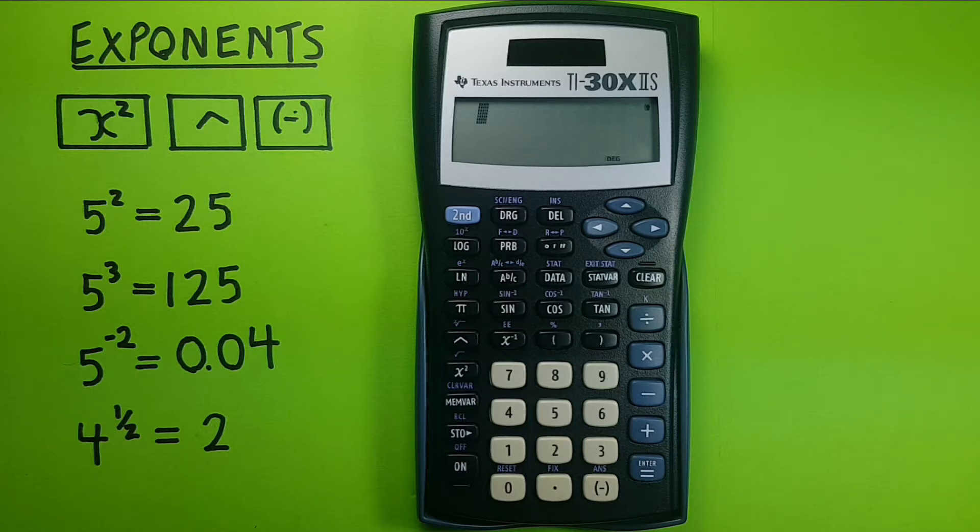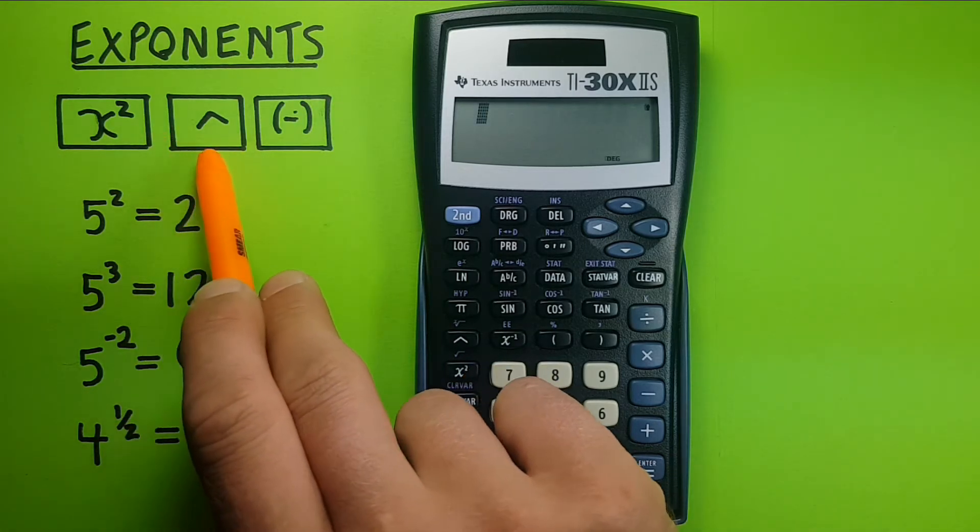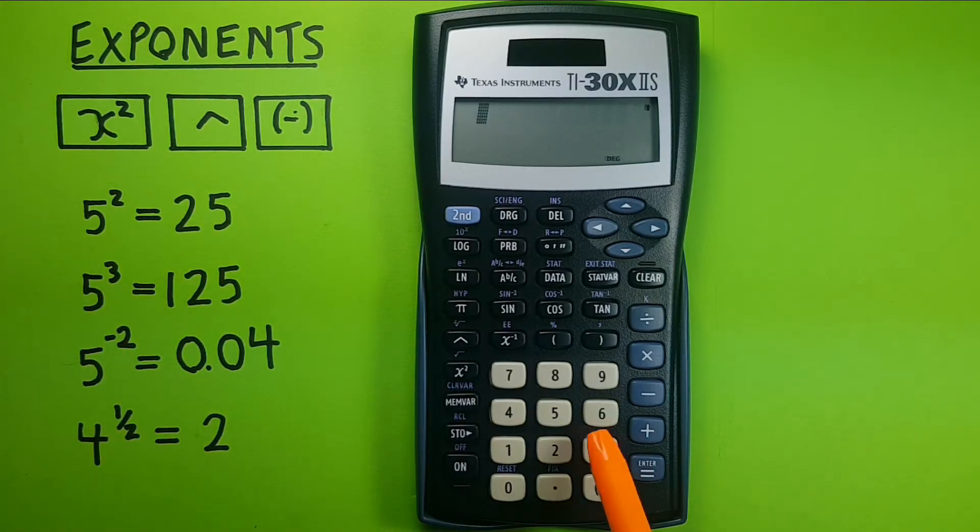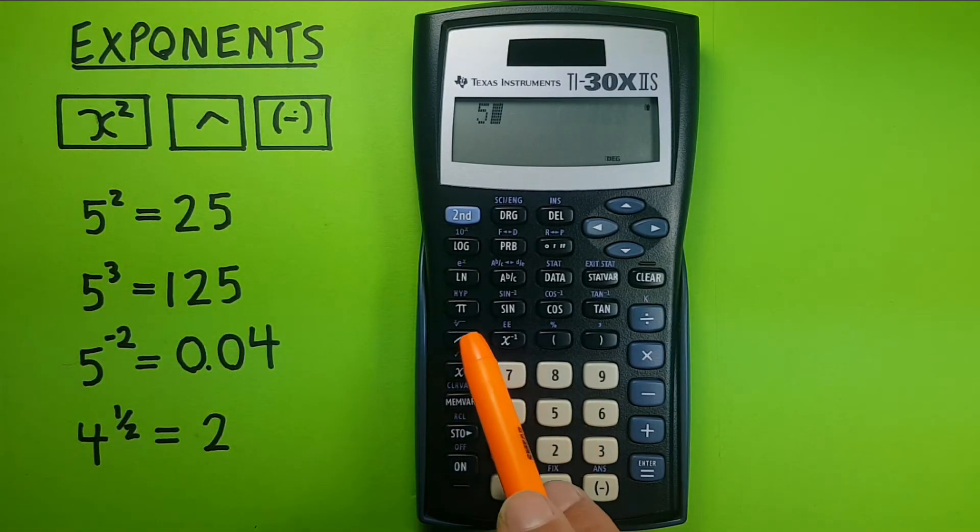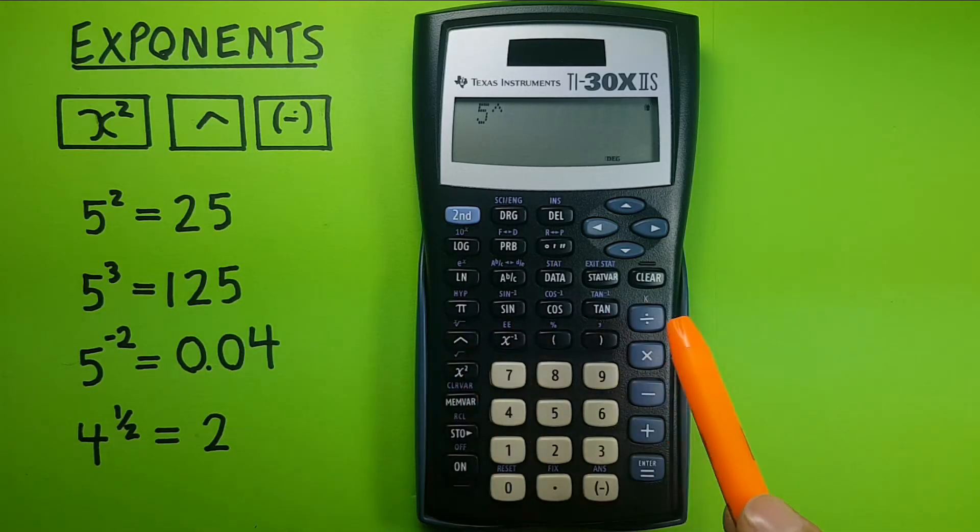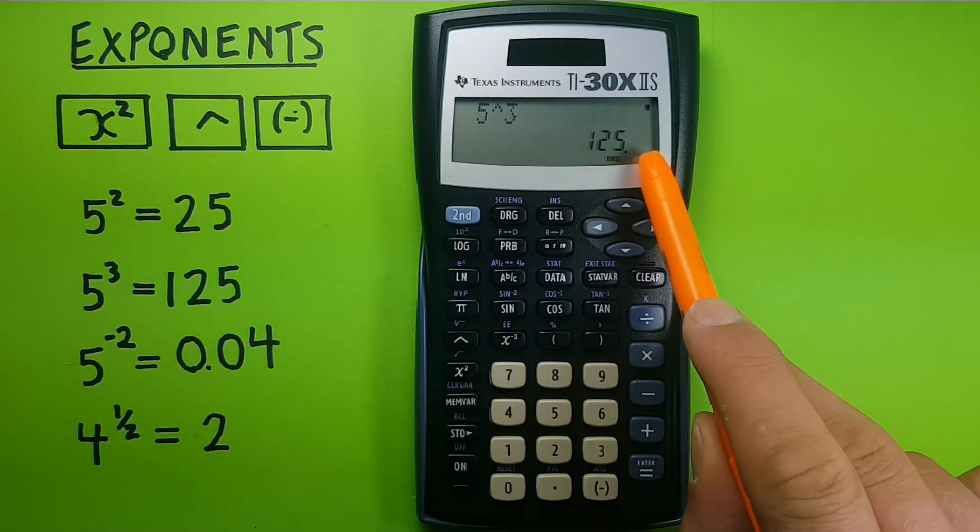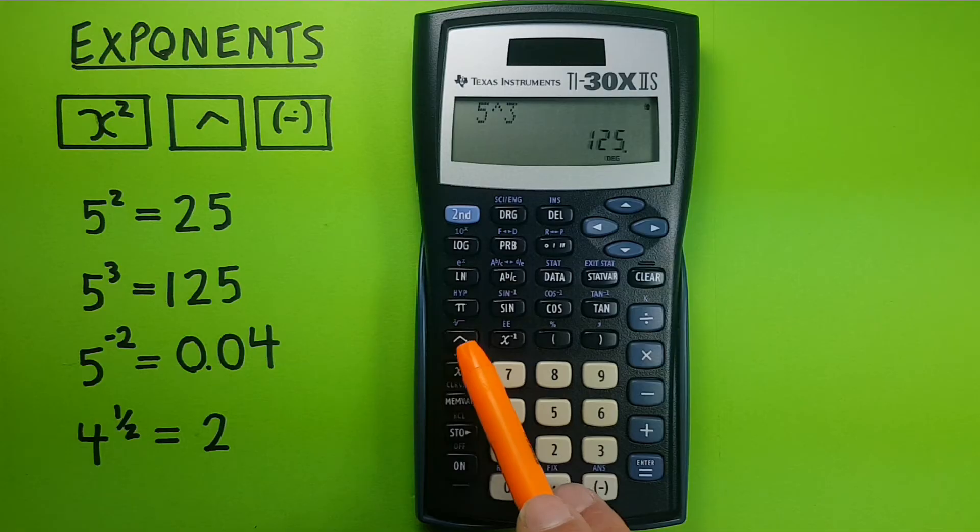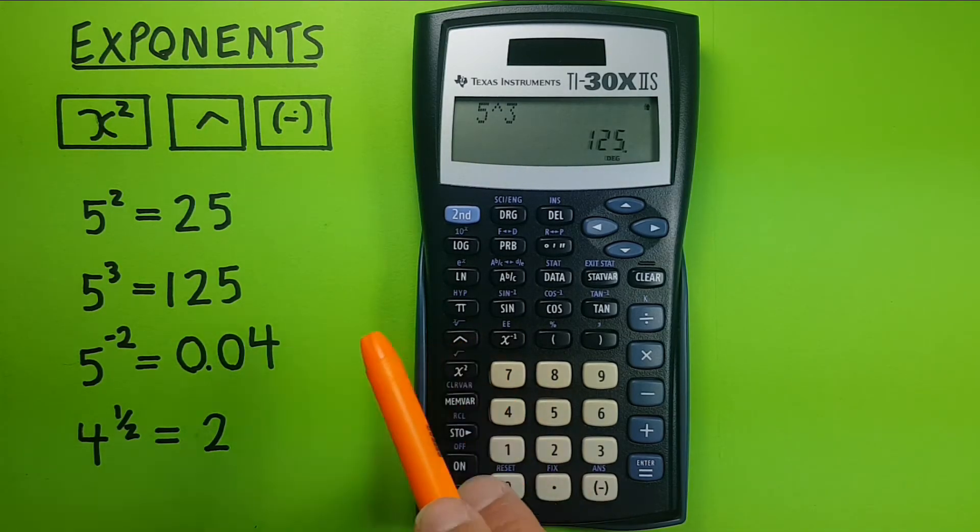If we want to cube a number, we need to use the up arrow or caret key. If we want five cubed, we would enter five up arrow three equals 125, which is the correct answer. So we can use this key, the up arrow or caret key, anytime we have an exponent that isn't two.